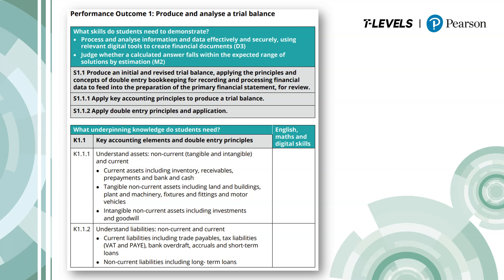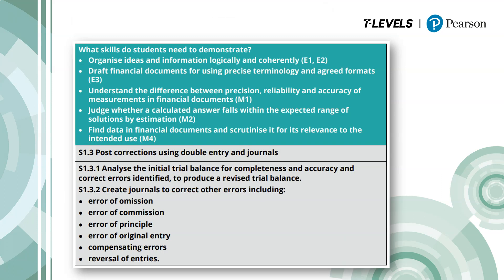Let's take a look at another example, also taken from performance outcome 1: produce and analyse a trial balance. Now we're looking at S1.3, the third specialist skill in performance outcome 1: post-corrections using double-entry and journals. The layout is the same — at the top in the green box we've included the skills from the general competency framework, and again you'll note the reference to English and Maths by E1, E2 and M1 and M2 in brackets.